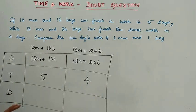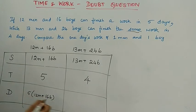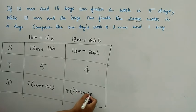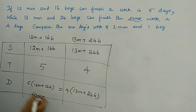For distance, the total work - we don't know the work amount, but the two works are the same. Distance is speed into time. So 5 into 12m plus 16b equals 4 into 13m plus 24b.